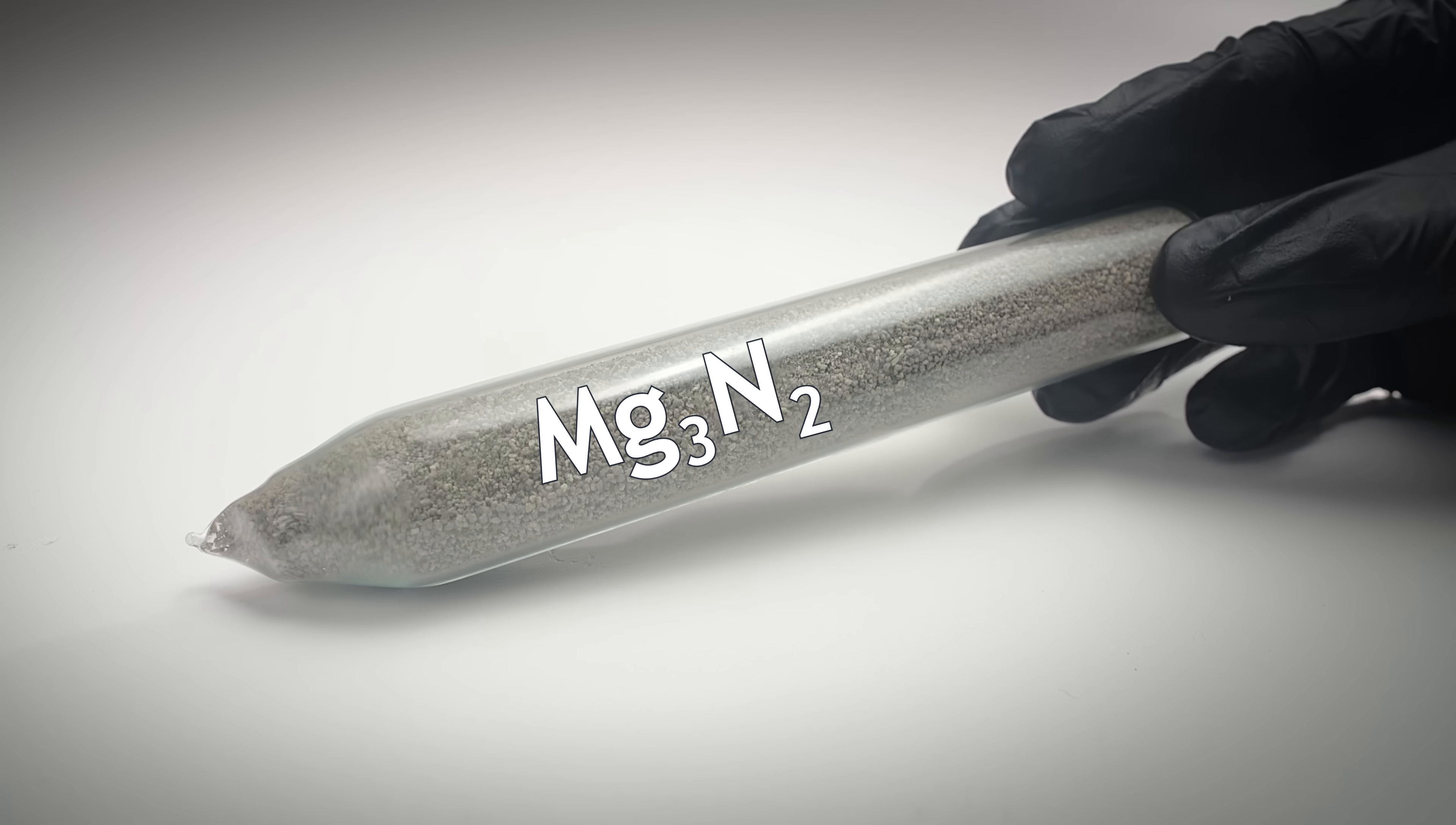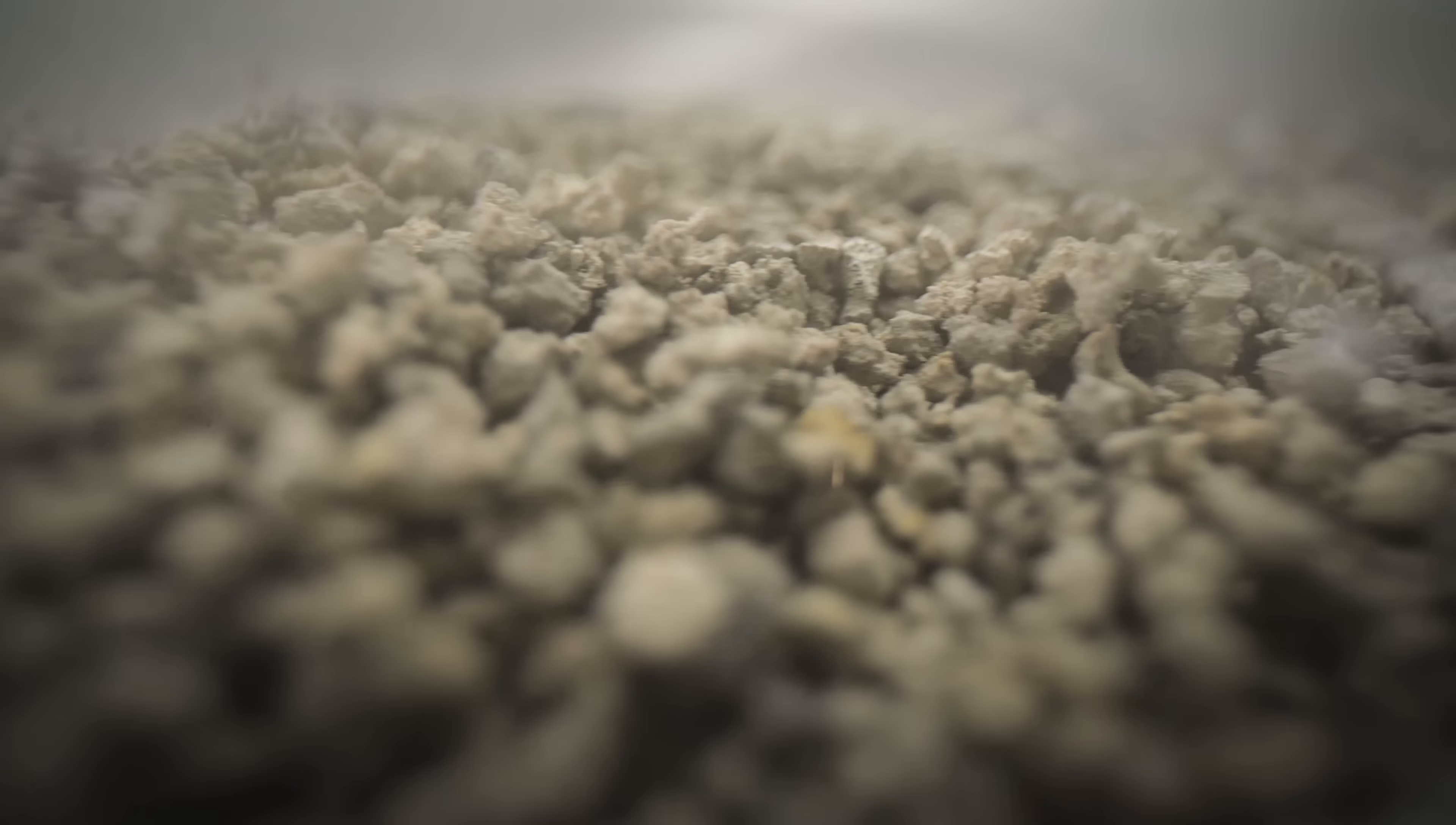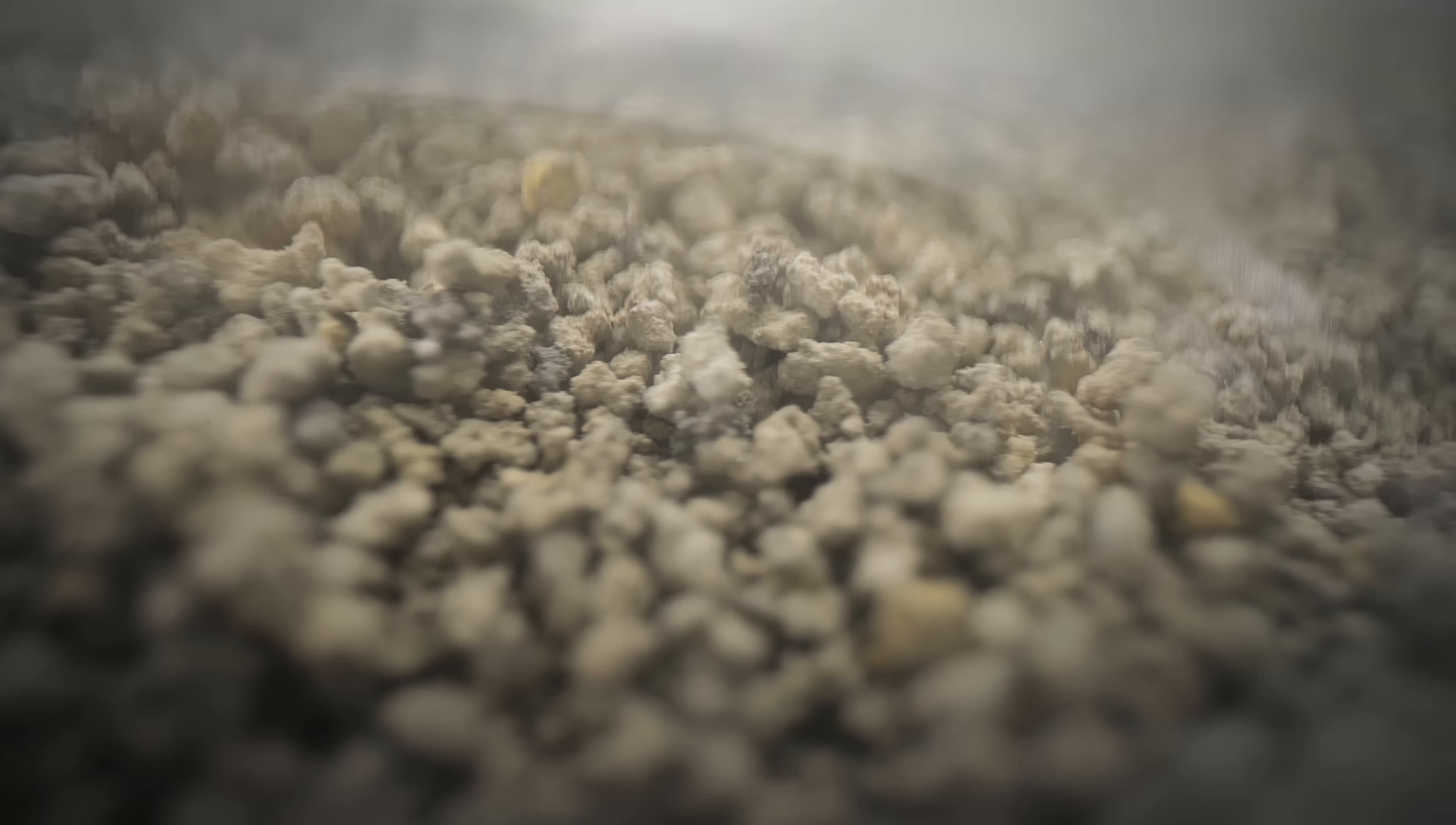Because of its reactivity with moist air, magnesium nitride is best stored in a sealed ampoule like this one. Magnesium nitride is a yellow-brown powder that actively releases ammonia in moist air.